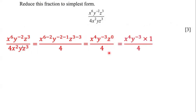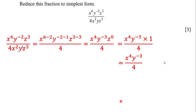We can still simplify more because z to the power of 0 is actually equal to 1. So we replace it with 1. We have x to the power of 4 times y to the power of negative 3 multiplied by 1, and multiplying by 1 doesn't change the value. So the final answer is x to the power of 4 multiplied by y to the power of negative 3, all over 4.